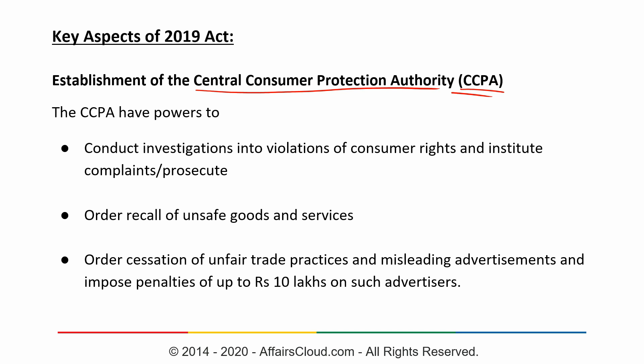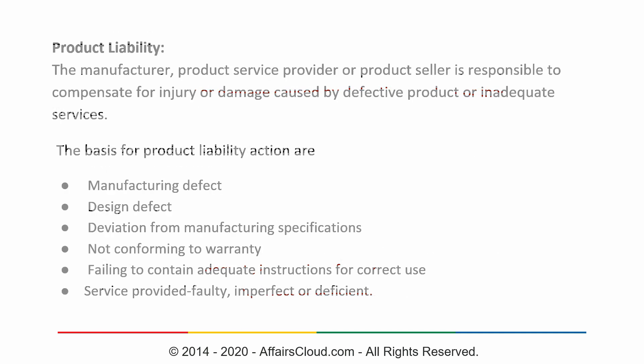The CCPA may also order recall of unsafe goods and services, and has the authority to order cessation of unfair trade practices and misleading advertisements. The CCPA shall have the power to stop or cease misleading advertisements and may hold the manufacturer, the service provider, as well as the celebrity endorser accountable. For example, if someone claims that an oil could cure hereditary baldness, such misleading advertisements can be penalized with financial penalties of up to rupees 10 lakh on the first violation, with increased penalties for subsequent violations.